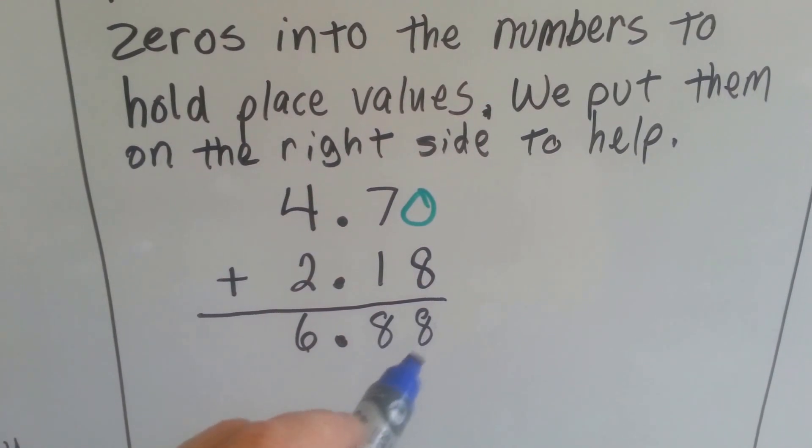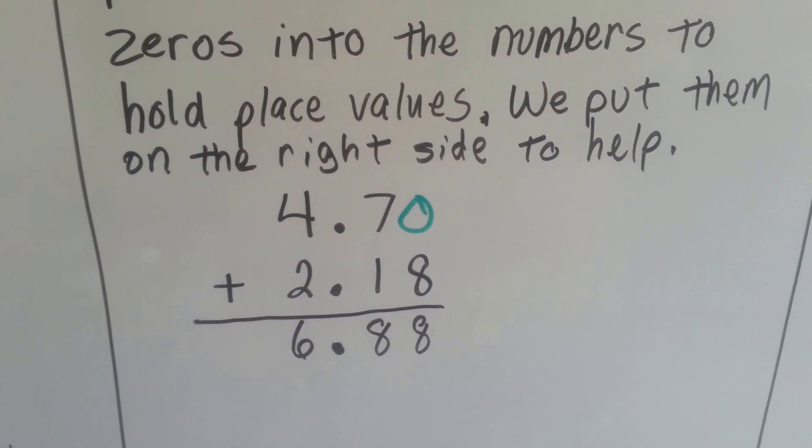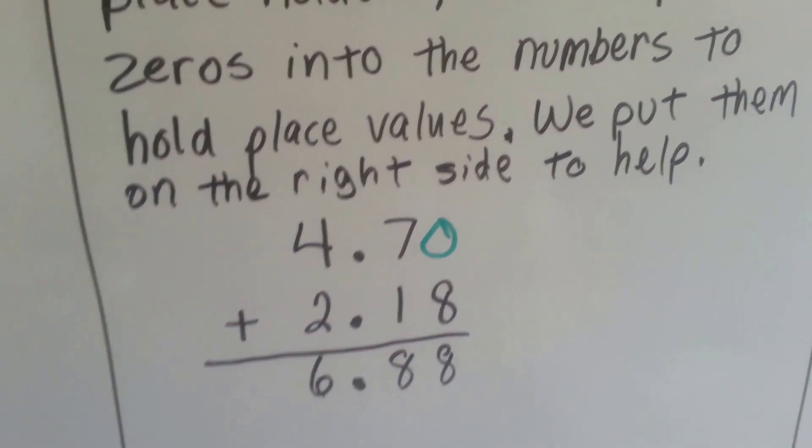0 and 8 is 8, 7 and 1 is 8, and 4 and 2 is 6. Our answer is 6 and 88 hundredths. See how the zero helped us?